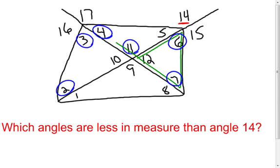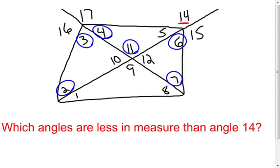There's one more to look at. If the measure of angle 11 is smaller than angle 14, then angle 9 is also going to have to be smaller, because angle 9 and angle 11 are congruent. Those are all the angles that I know are going to be smaller in measure than angle 14. Could there be others? Yes, there could be, but those are the ones guaranteed to be smaller using the exterior angle inequality theorem.